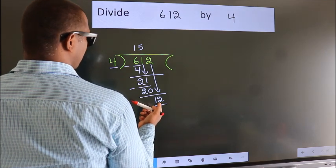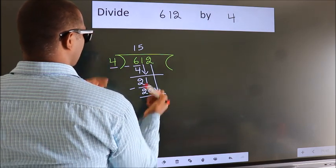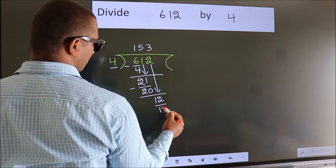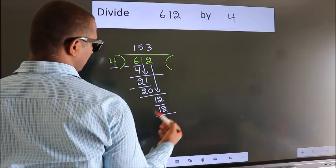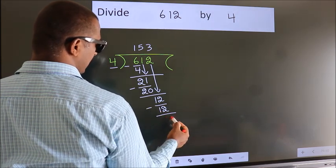When do we get 12? In 4 table, 4 3s, 12. Now we subtract, we get 0.